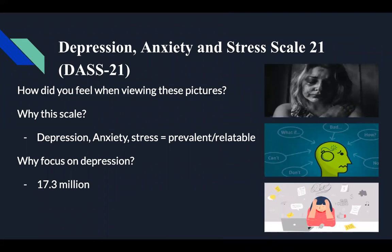As I'm sure many of you were able to identify after viewing the pictures, our measure is about depression, anxiety, and stress. The measure is called the Depression, Anxiety, and Stress Scale 21, or for short, the DASS-21. It is called the DASS-21 to reflect a shortened version of the original DASS-42. We chose this scale because depression, anxiety, and stress are very common in today's society.